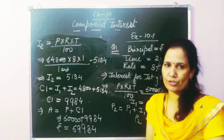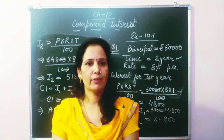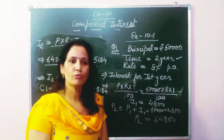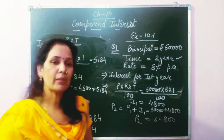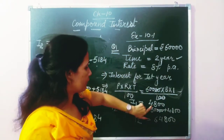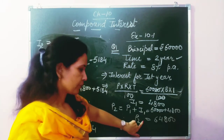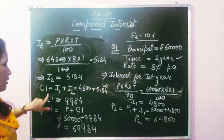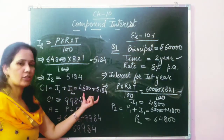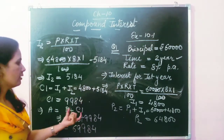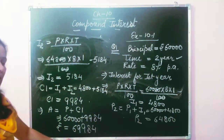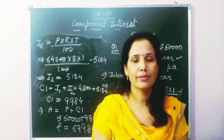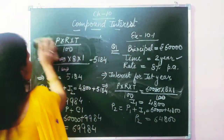To summarize this question: we found the amount Mrs. Sharma will receive after 2 years using compound interest calculated by the simple interest method. First we found interest for Year 1 as ₹4,800, added it to principal to get the Year 2 principal, then calculated interest on that. The total compound interest is ₹9,984, and adding to the original ₹60,000 gives ₹69,984. Now let's discuss Question 2.